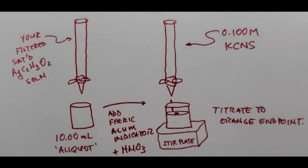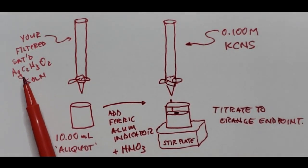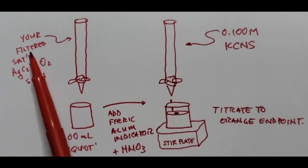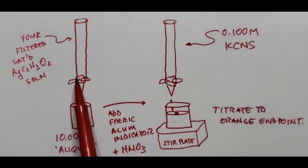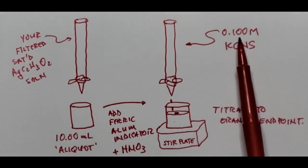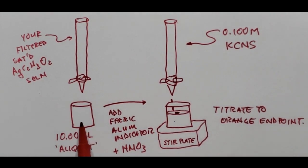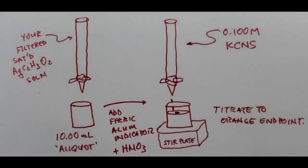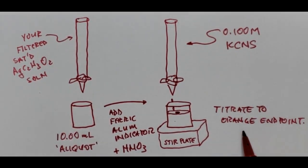We'll set up two burettes — one with filtered saturated silver acetate solution, and one with our titrant, 0.1 molar potassium thiocyanate. I'll drain a 10 milliliter portion of the saturated silver acetate into a 50 mL beaker, add a little indicator and nitric acid, then titrate it with potassium thiocyanate to an orange endpoint. The potassium thiocyanate reacts in a one-to-one mole-to-mole ratio with silver.